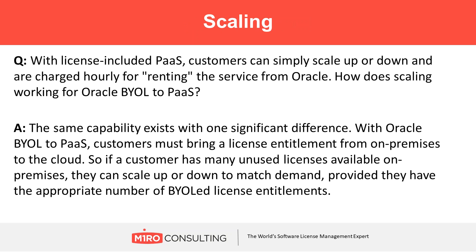With license-included PaaS, customers can scale up or down or be charged hourly for renting the service — and the same capability exists with Oracle BYOL. Customers must bring a matching license title. With universal credits specifically, if you need to scale up, you're getting those extra charges where the 1.5 times pay-as-you-go rate comes into play. There is some scaling ability, but it's mostly limited by the way universal credits are structured.